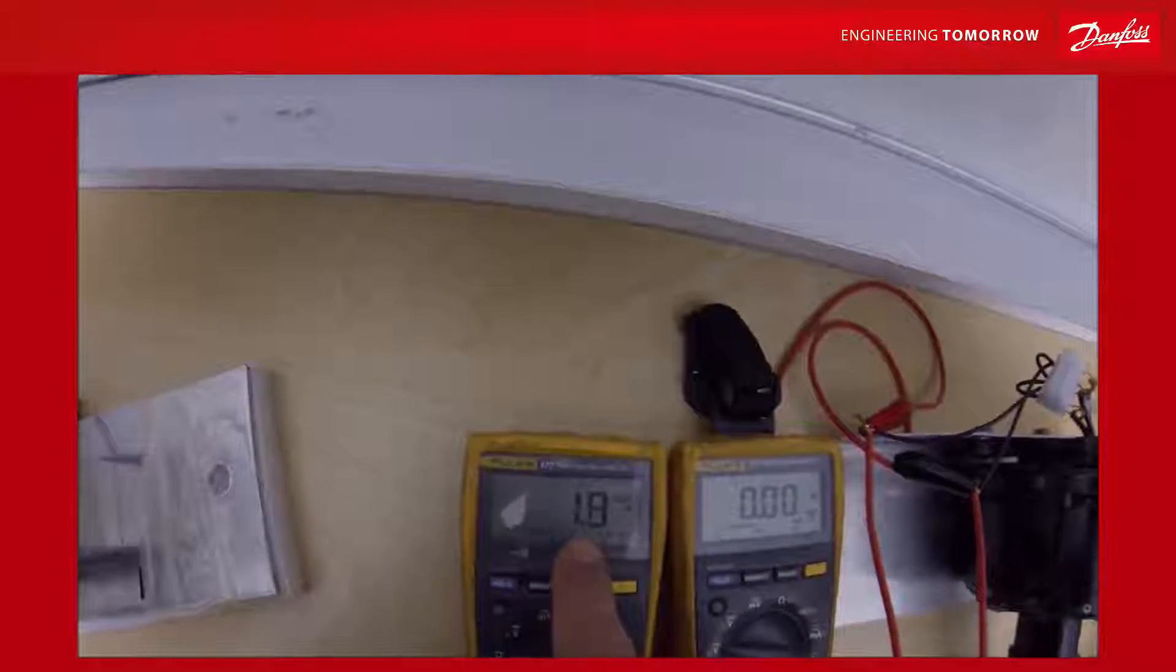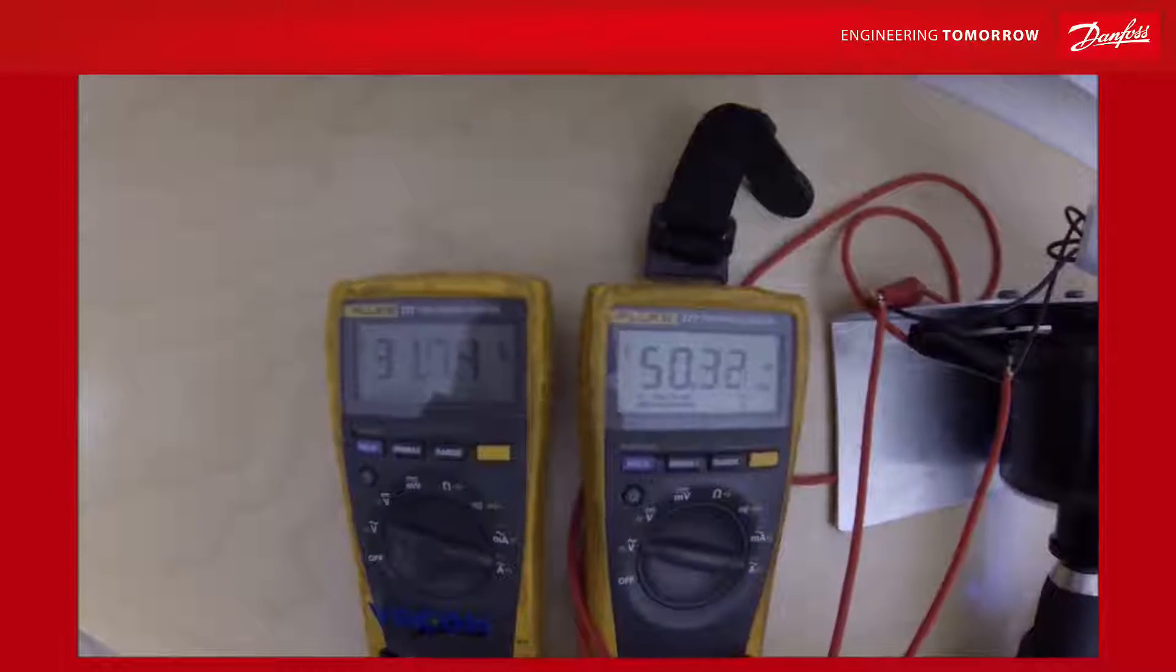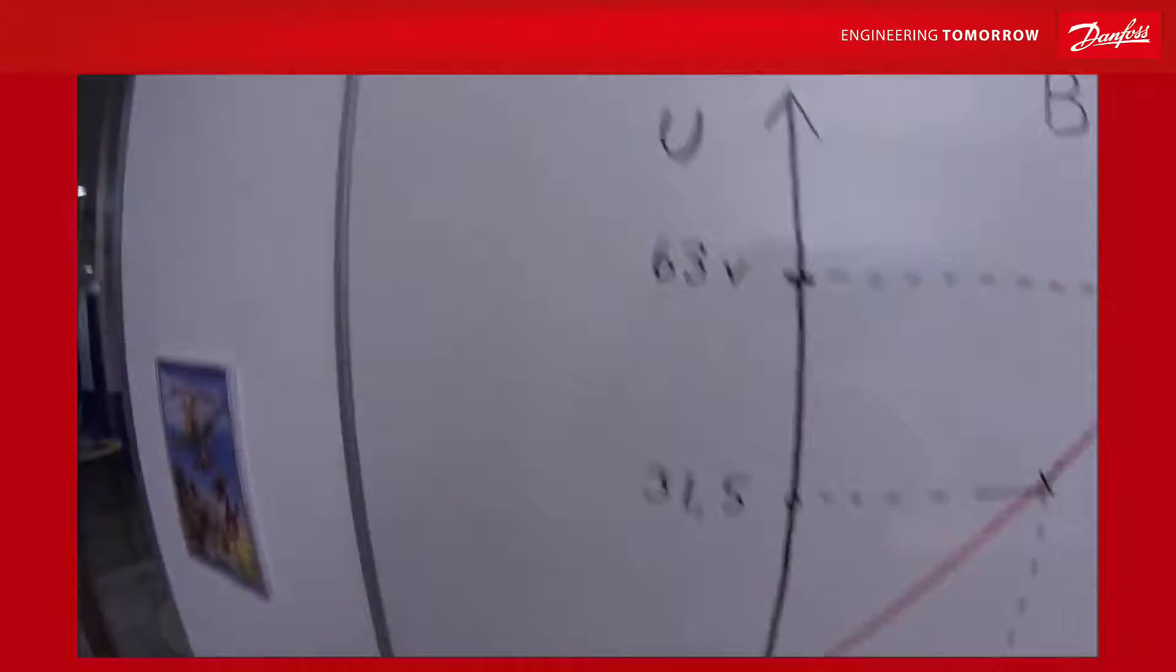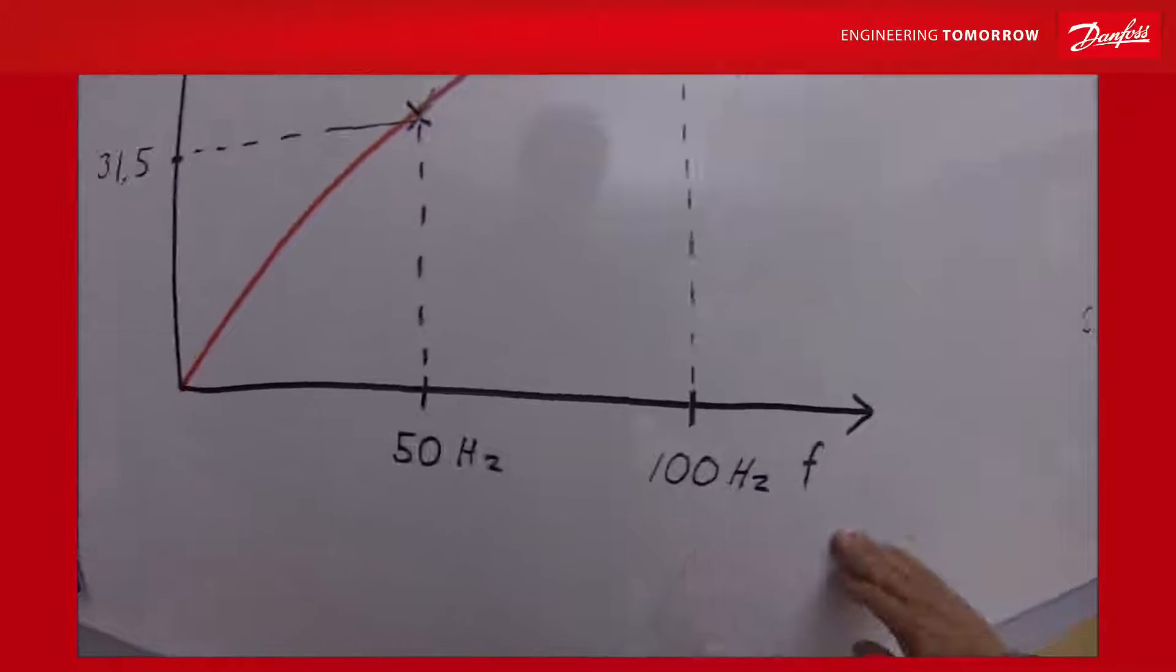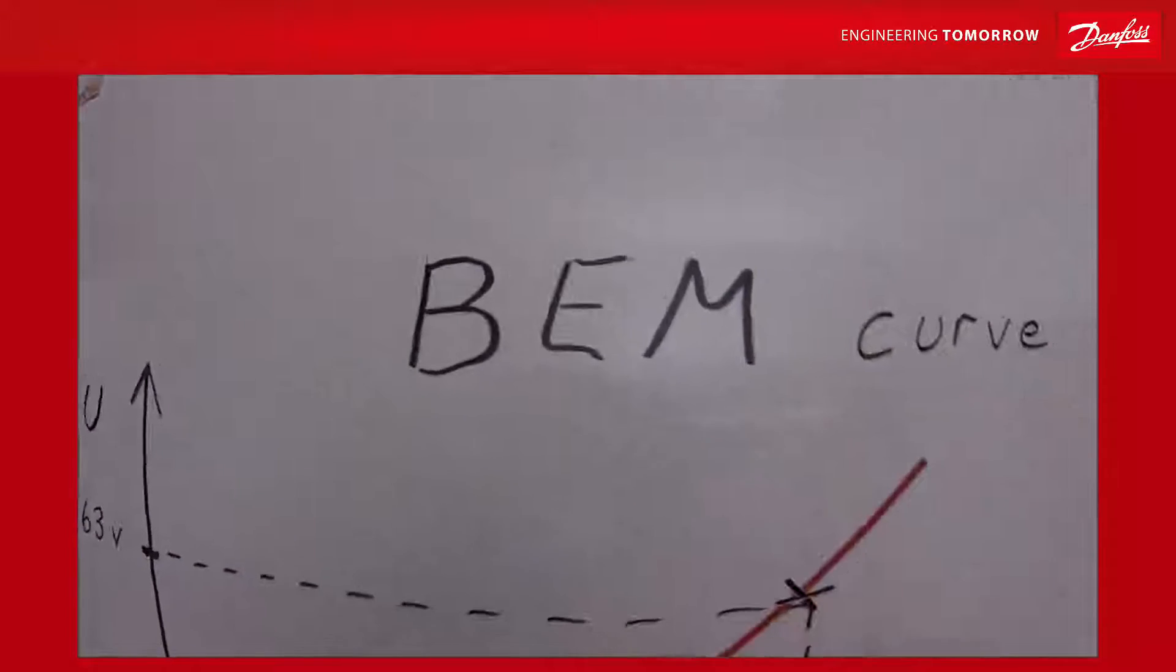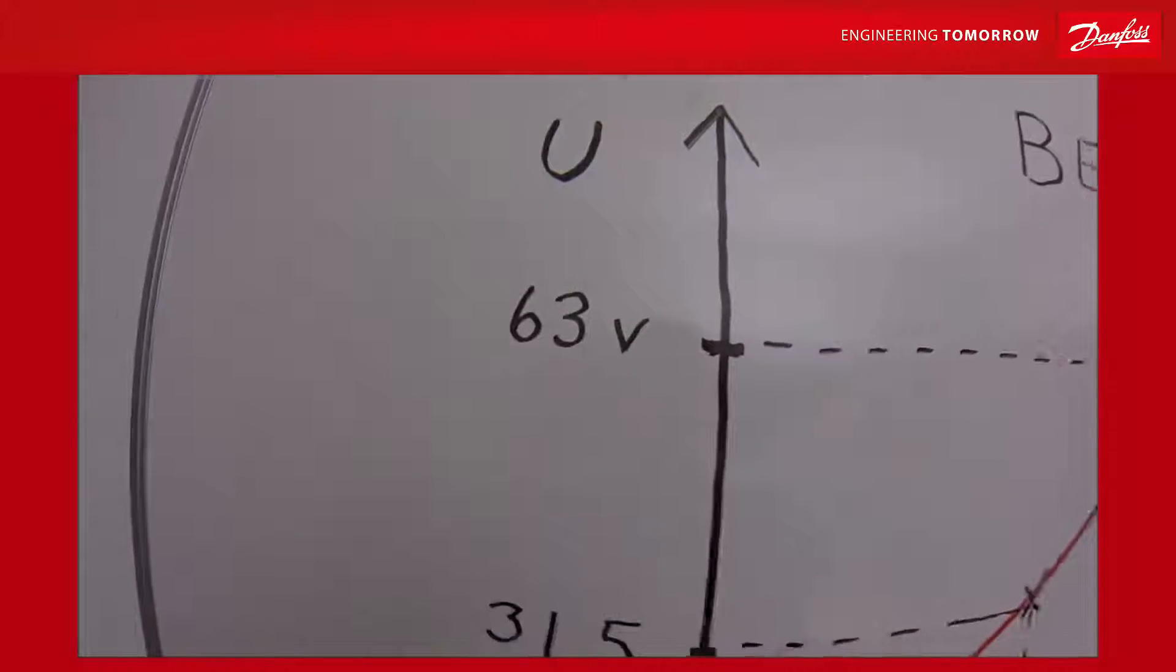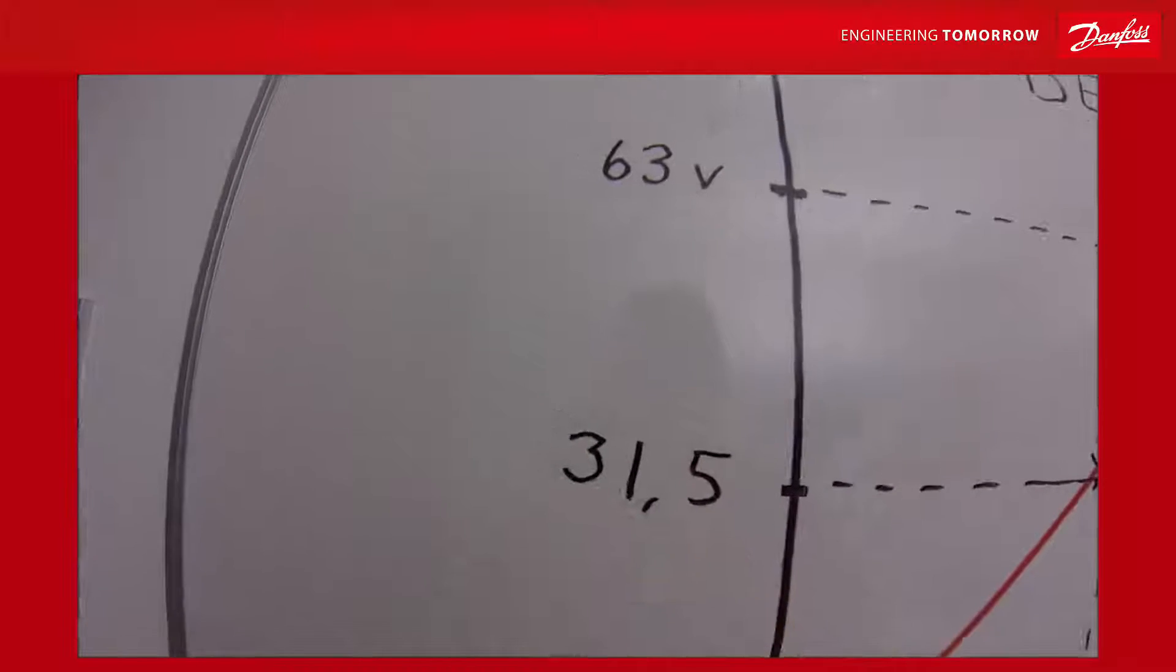And the relation between the voltage and the frequency is quite constant. The relation between the voltage on the output and the rotation speed of the shaft and then also the frequency have a constant relation called the back EMF curve. At 100 Hertz this specific generator produces 63 volts. Half the speed, 50 Hertz, it produces also half the voltage.